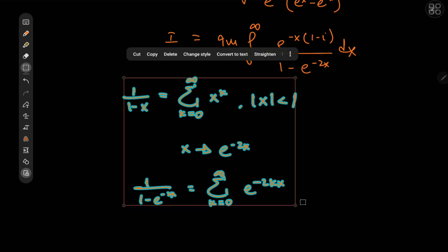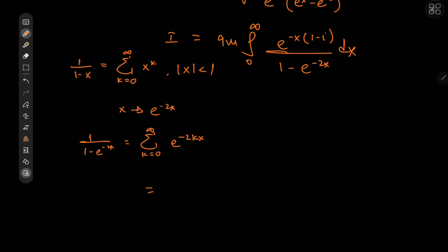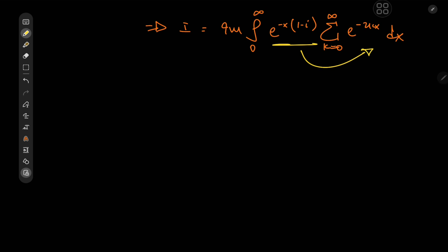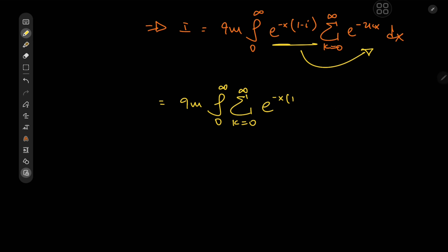This implies that the integral I equals the imaginary part of the integral from zero to infinity of e^{-(1-i)x} times the sum over k from zero to infinity of e^{-2kx} dx. Taking the e^{-x} term inside the summation and combining exponents, we get e^{-(1 + 2k - i)x} in the integrand.